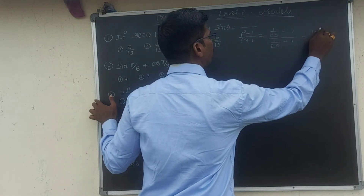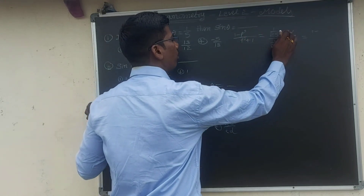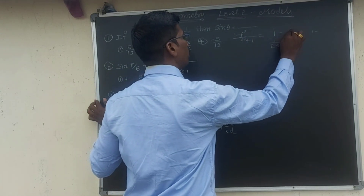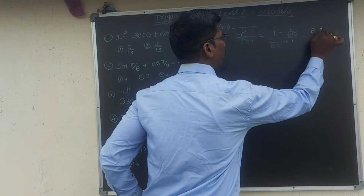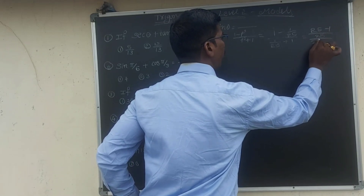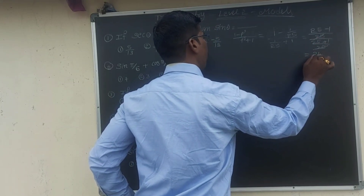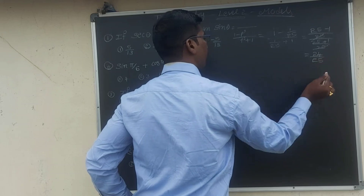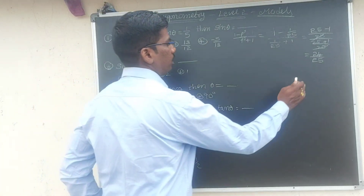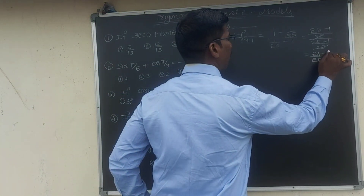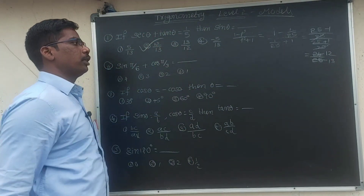So the formula is 1 minus p squared by 1 plus p squared. Substituting p = 1/5: 1 minus 1/25 by 1 plus 1/25. This gives us 25 minus 1 by 25 over 25 plus 1 by 25. The 25s cancel, giving 24 by 26, which simplifies. The answer is 12 by 13, second option.